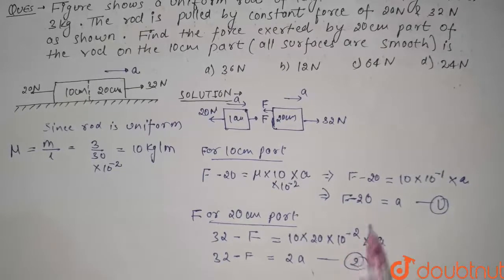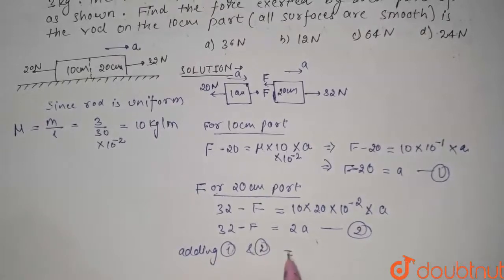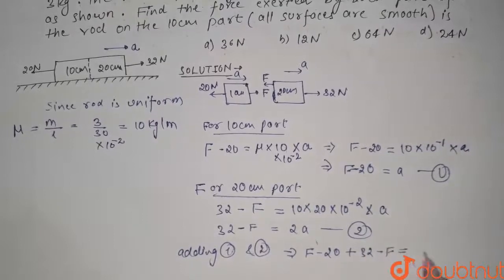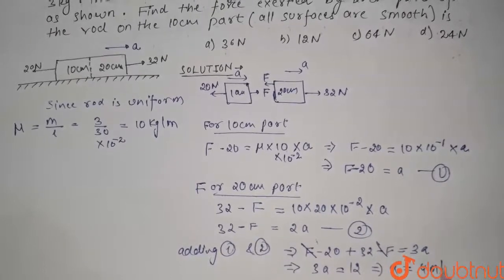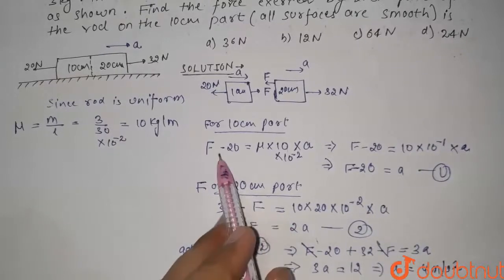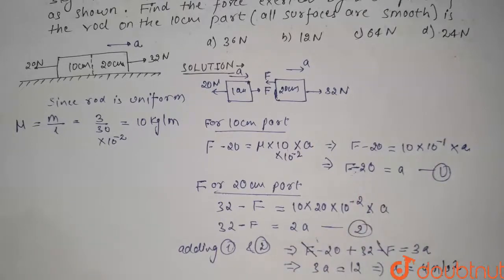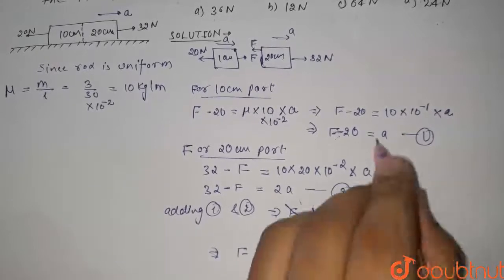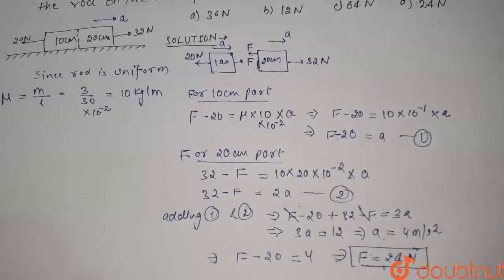Now we solve these two equations to find the value of F. Adding the first and second equations: F minus 20 plus 32 minus F equals a plus 2a. The F terms cancel, giving 12 equals 3a, so acceleration a equals 4 meters per second squared. Substituting into the first equation: F minus 20 equals 4, therefore F equals 24 newton. So the force exerted by the 20 centimeter part on the 10 centimeter part is 24 newton. The correct option is option D.